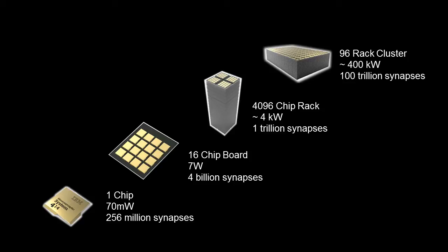Compared to the Blue Gene-Q supercomputer Dharmendra showed earlier — which consumes 7.9 megawatts — this system consumes only 1/20th of the power. And furthermore, the Blue Gene computer runs a human-scale neural network 1,500 times slower. Combined, this system would be 30,000 times more energy efficient. And 100 trillion synapses is the same number of synapses we have in our brain.